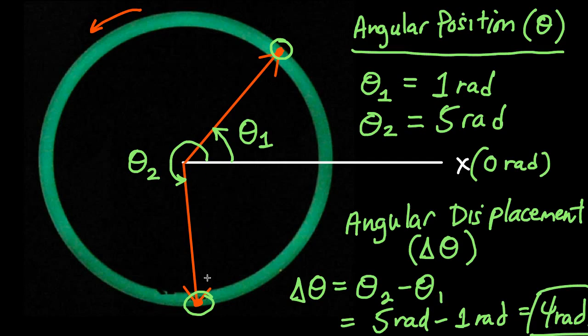Now it turns out angular displacement and angular position are vector quantities. And we are going to discuss how the direction is figured out shortly.